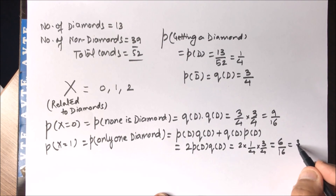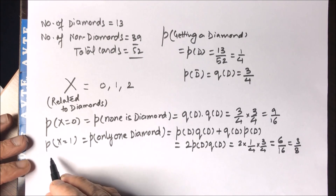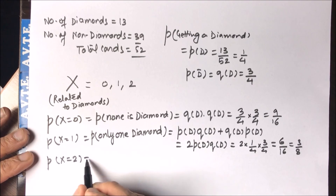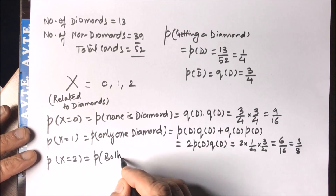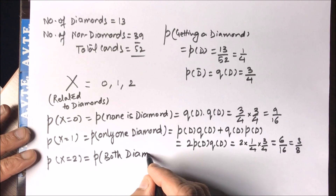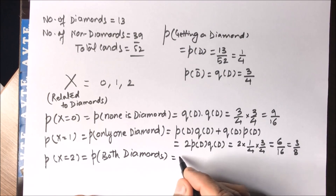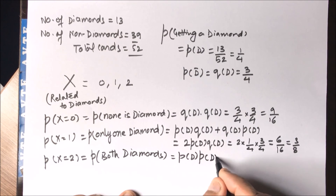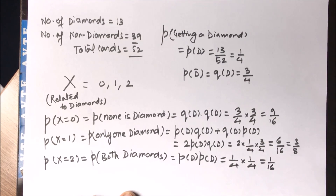It is better to keep the denominator the same. Then for X = 2, both cards are diamonds. This is only one case: success with success — diamond and diamond. So P(X=2) = (1/4) × (1/4) = 1/16.